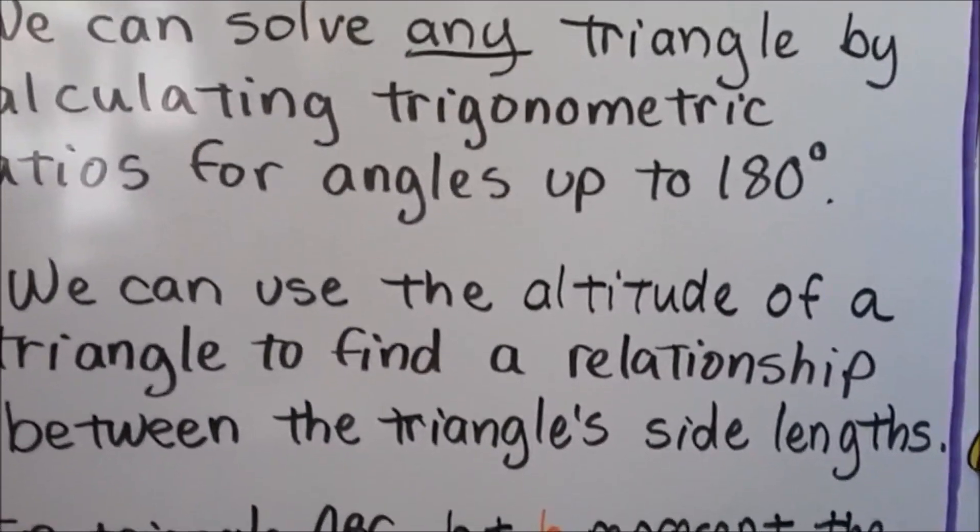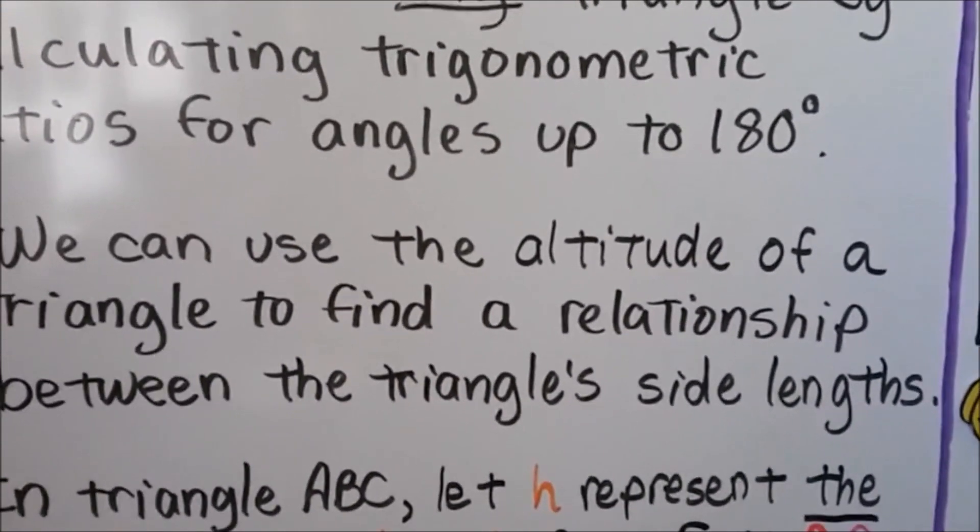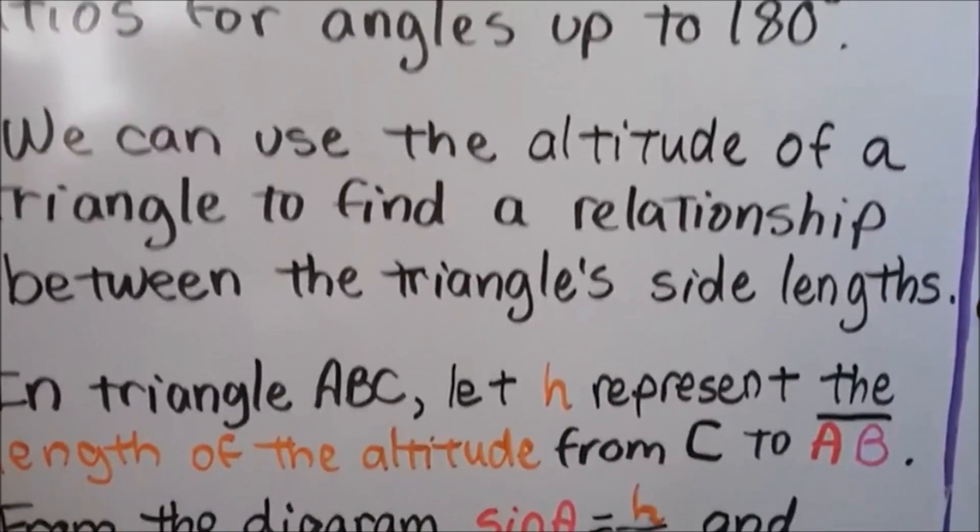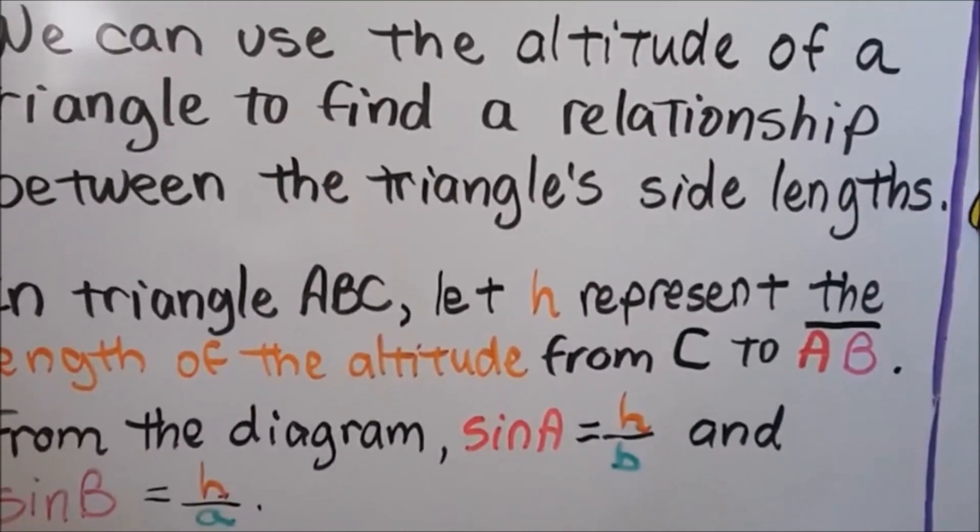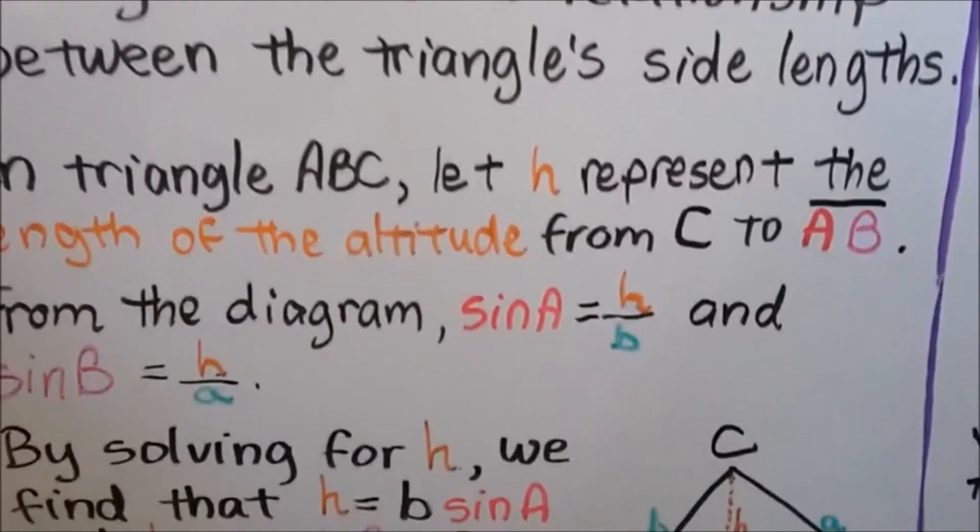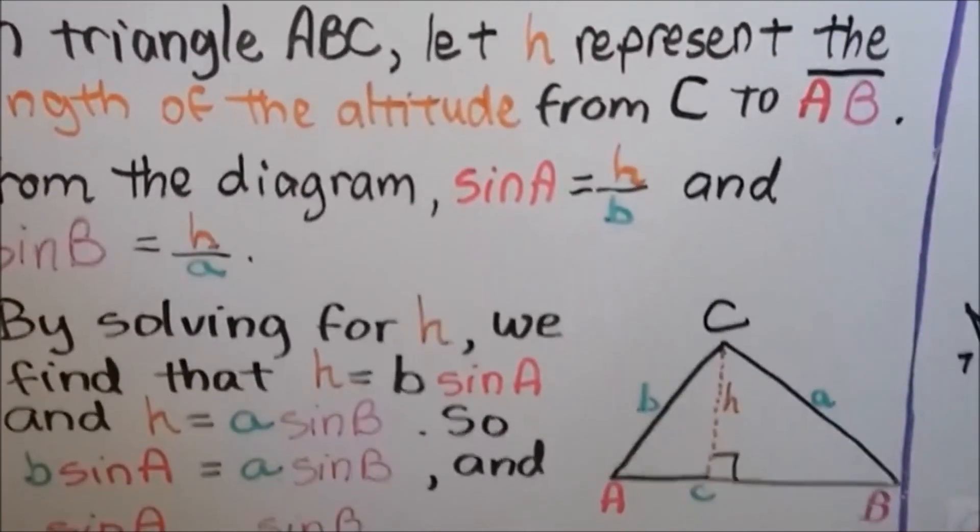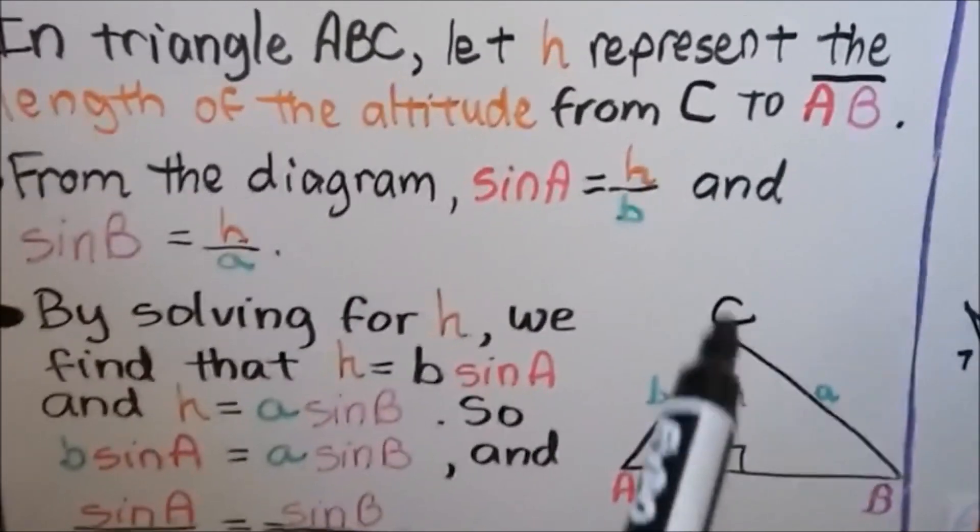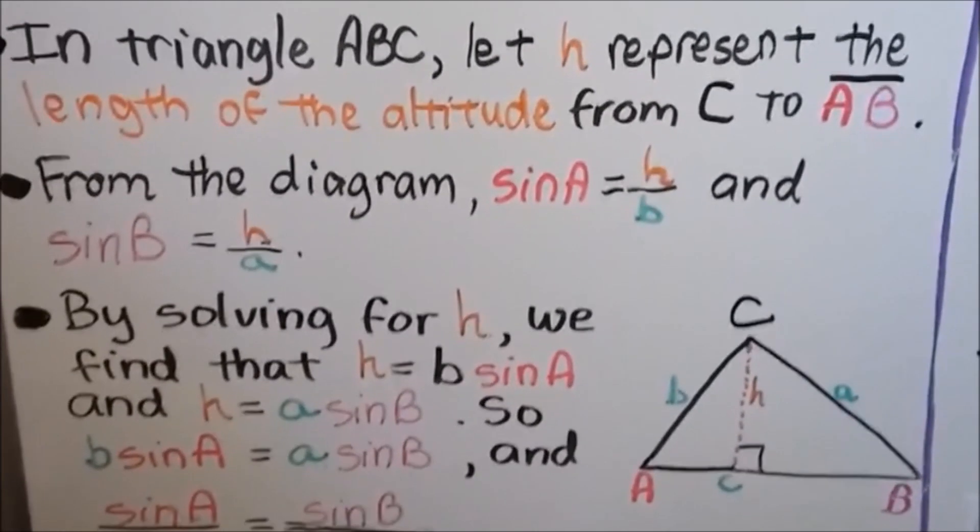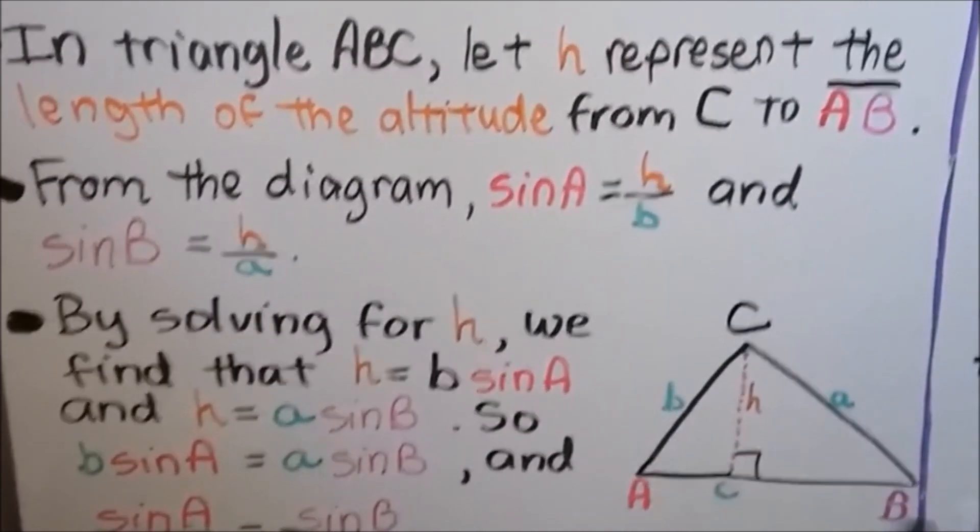We can solve any triangle by calculating trigonometric ratios for angles up to 180 degrees. We can use the altitude of a triangle to find a relationship between the triangle's side lengths. In triangle ABC, we'll let H represent the length of the altitude from C to segment AB.